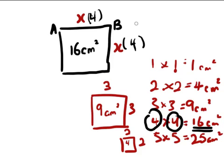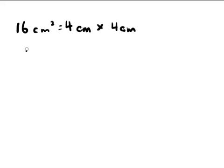So the working is actually very simple. You just put 16 cm squared is actually equals to 4 cm by 4 cm. That means times 4 cm. Therefore, your AB is actually equals to how much? 4 cm. Good job.